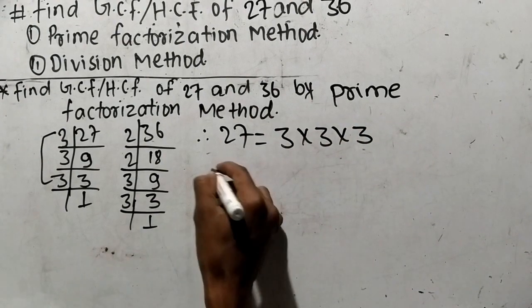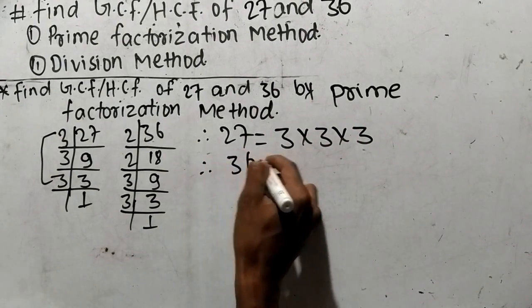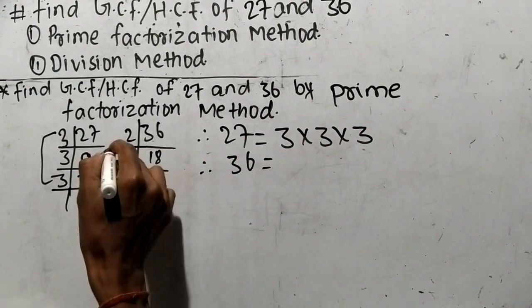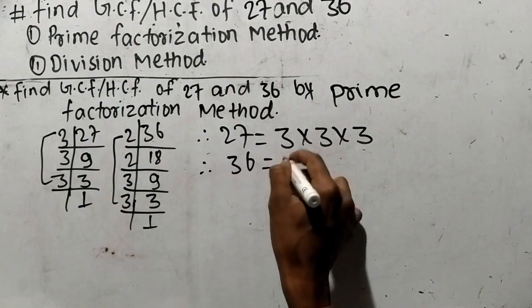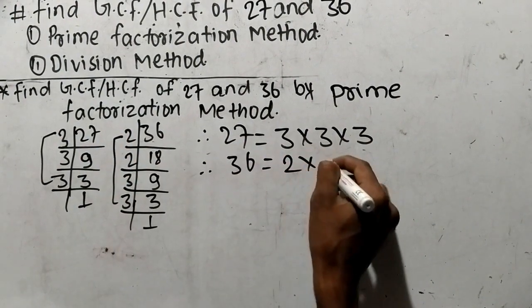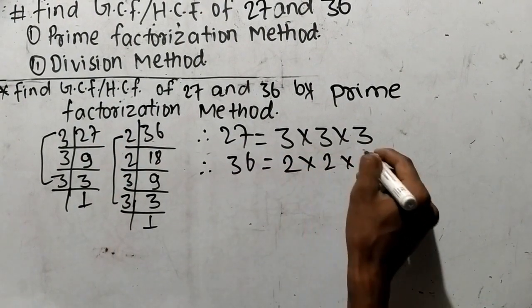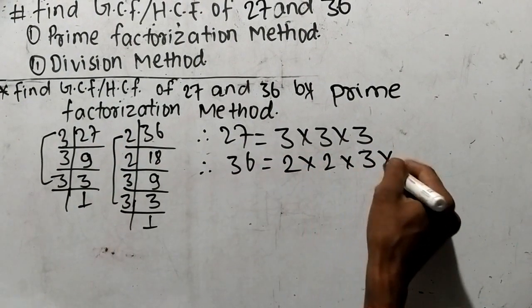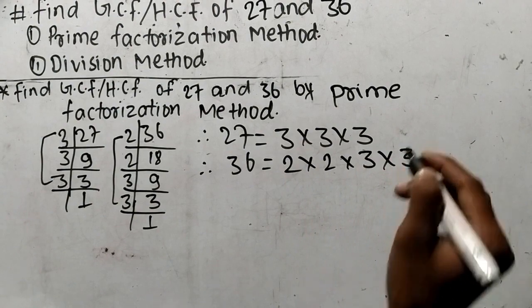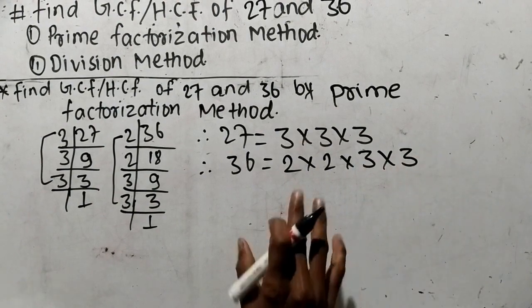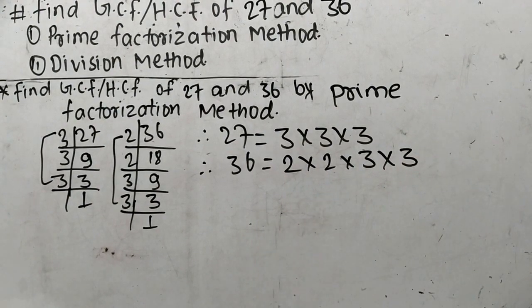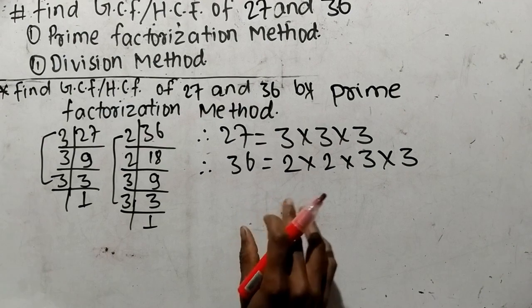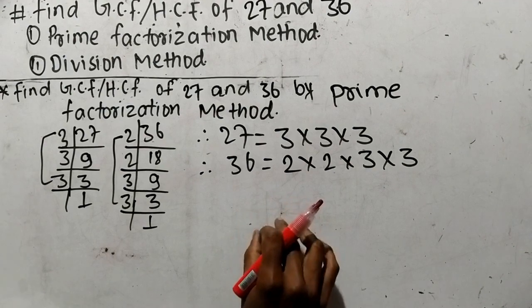In the same way we can write 36 is equal to 2 times 2 times 3 times 3. So we have taken out the prime factors of 27 and 36.